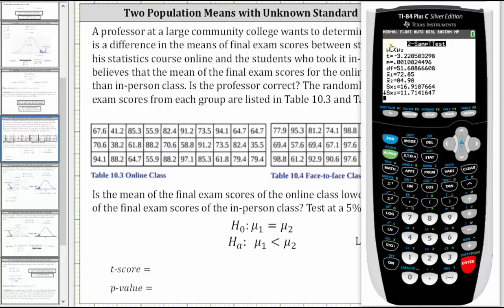We have a t-score of approximately negative 3.2286 and a p-value of approximately 0.0011. Let's go ahead and record these values.